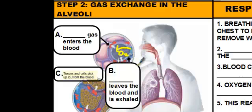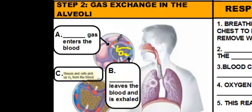As we learned in pulmonary circulation, oxygen-poor blood enters the lungs. Because there's a high concentration of oxygen in the lungs and a low concentration of oxygen in the blood, the oxygen is going to move into the blood through the process of diffusion. So oxygen gas enters the blood.